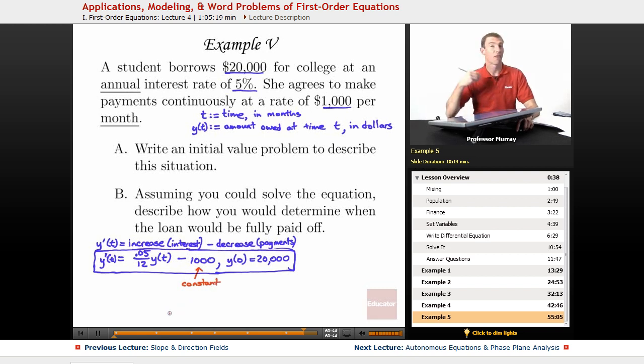That means she's paying $1,000 a month no matter what. Every month she pays $1,000 irrespective of how much she actually owes. But the interest that is building up on the loan is dependent on the amount that she currently owes. So this interest depends on the current value of y.